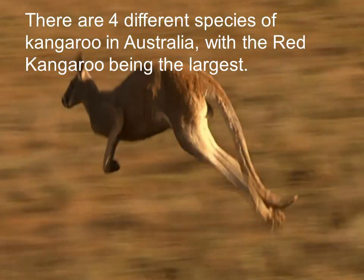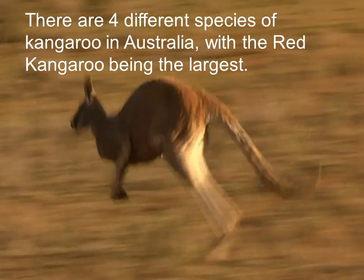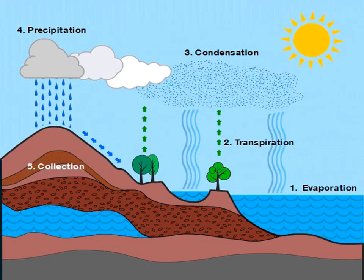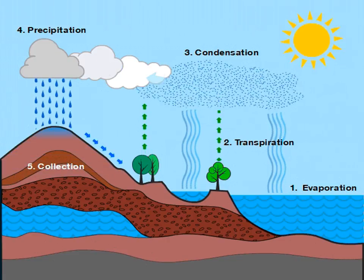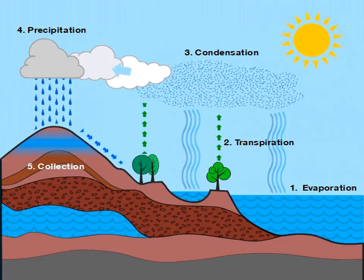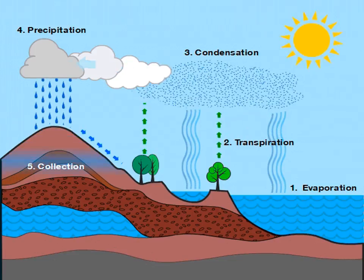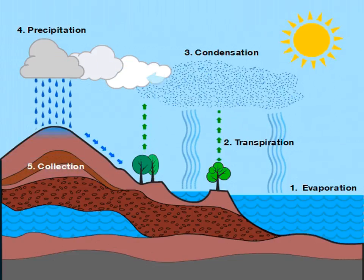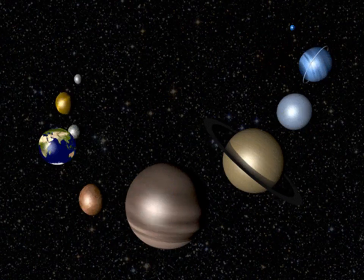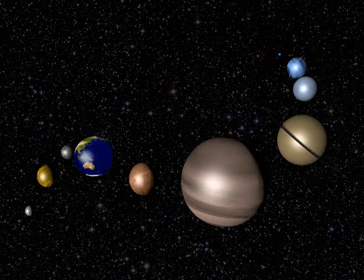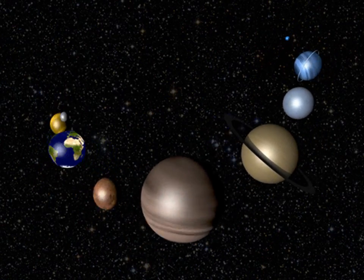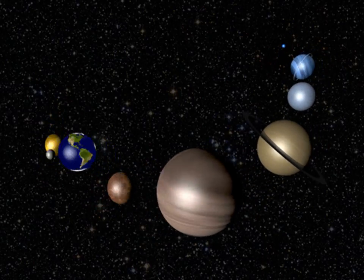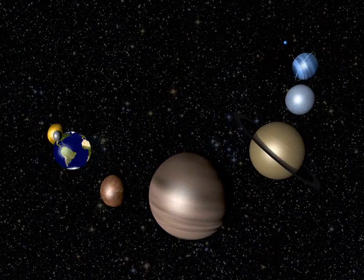Now let's move towards the second domain and that is hydrosphere. All the water on earth makes up the hydrosphere. It includes liquid water, ice and snow, and water vapour. Children, when astronauts observe the earth from space, it looks like a tiny blue ball. This is because more than two-thirds of earth's surface is covered by water.